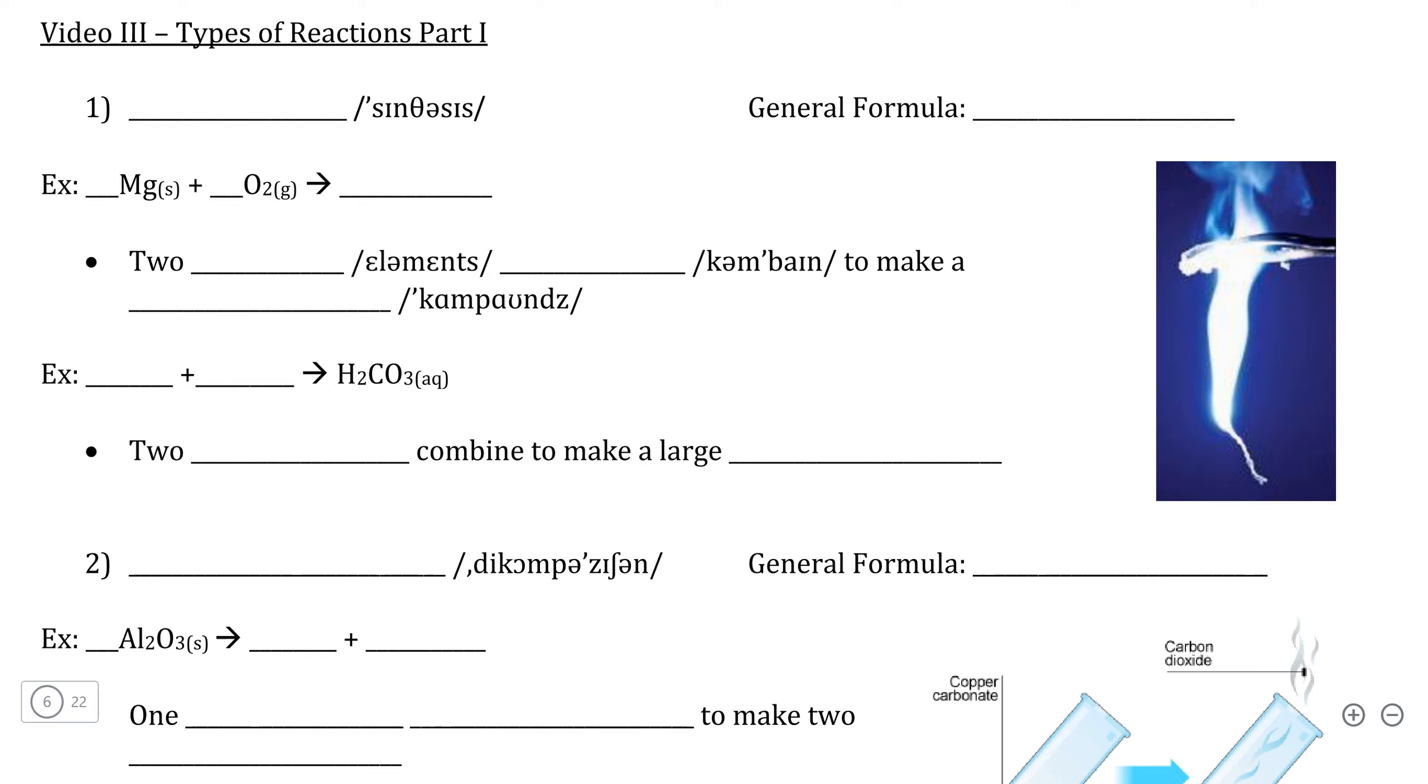So over the next two videos, we're going to be learning about the six major types of chemical reactions and how those reactions can be represented by what we call general formulas. We're going to start with arguably the most straightforward type of chemical reaction, what we call a synthesis reaction.